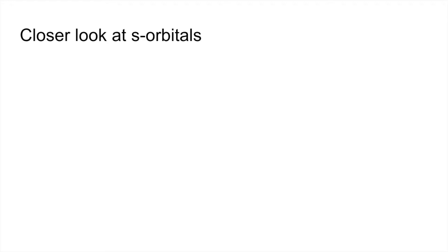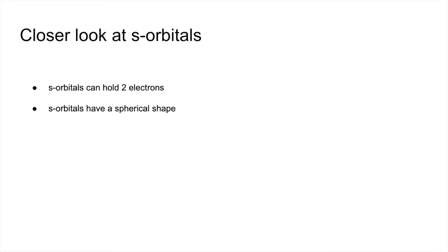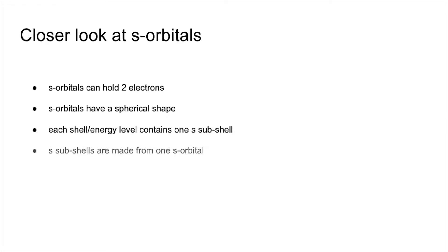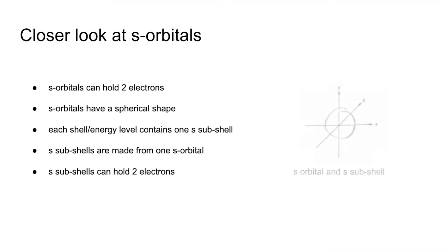We'll look at S orbitals first. S orbitals can hold two electrons and they have a spherical shape. Each shell or energy level contains one S subshell. S subshells are made from just one S orbital, so an S subshell can hold two electrons. If you had to draw an S orbital or an S subshell you would draw something like that, with the X, Y, Z axis to give it its 3D perspective.